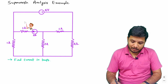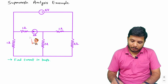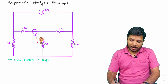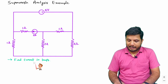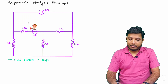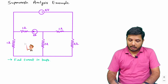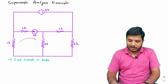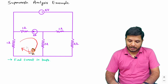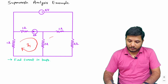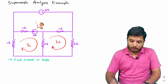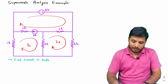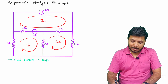In the circuit we have a voltage source of four volts and a current source of three amperes, and we need to find the current in the loops. When you apply mesh analysis, we need to see the loops. Let us consider all the loops in the clockwise direction. I'm considering loop one with current I1, loop two with current I2, and loop three with current I3. So here we have three loops.